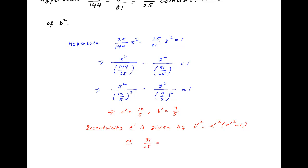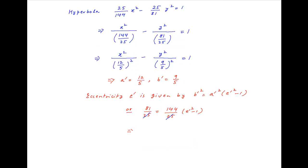Putting in the values of A' and B' obtained earlier, we get 81/25 = (144/25)(E'² − 1). This implies that E'² = 1 + 81/144, which equals 225/144. Therefore, E' = 15/12, which simplifies to 5/4.